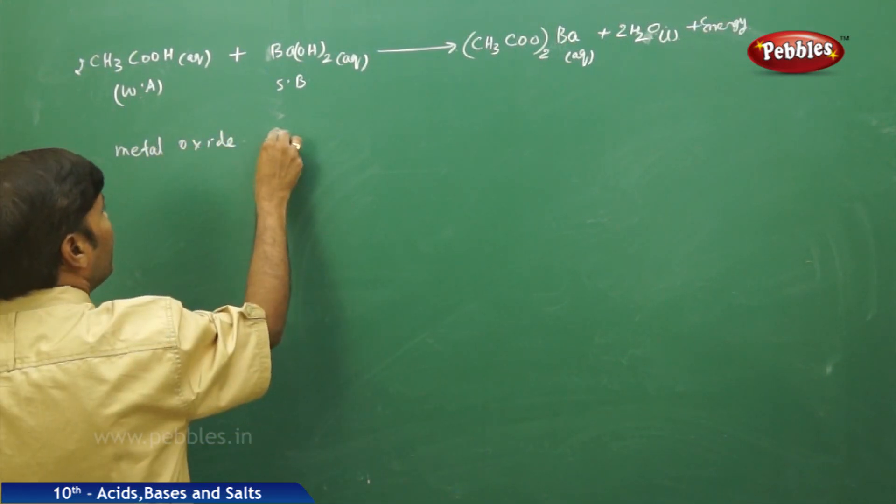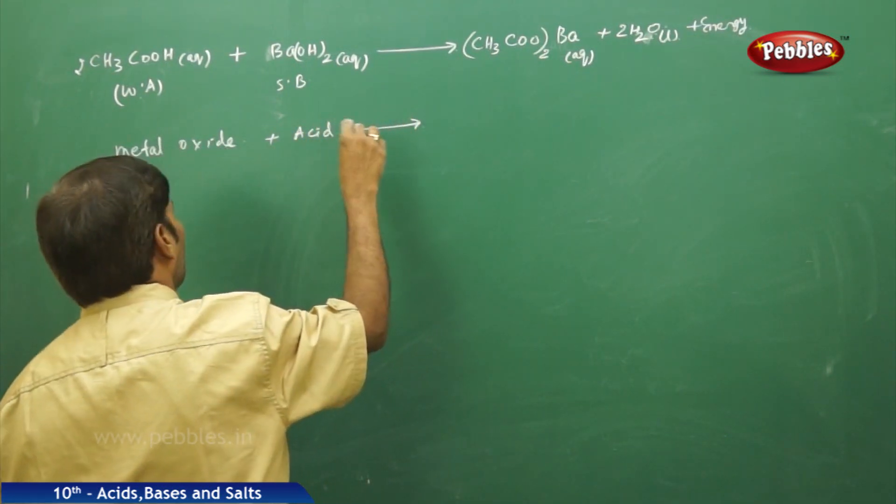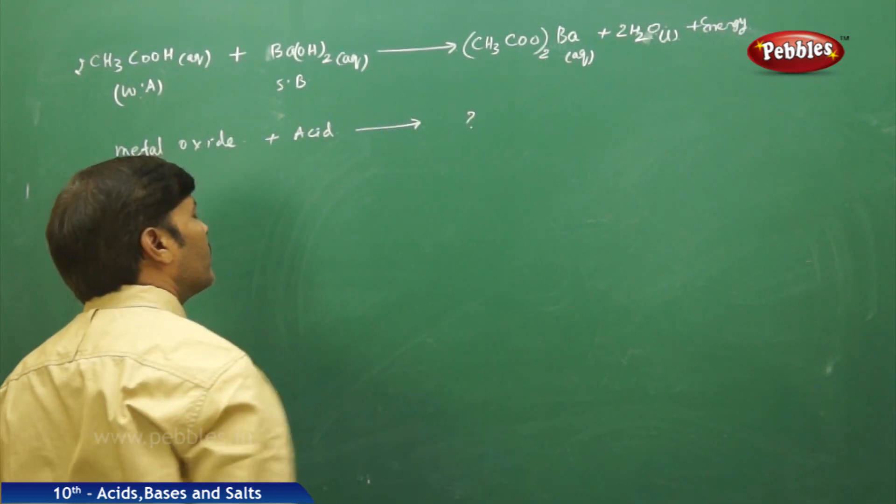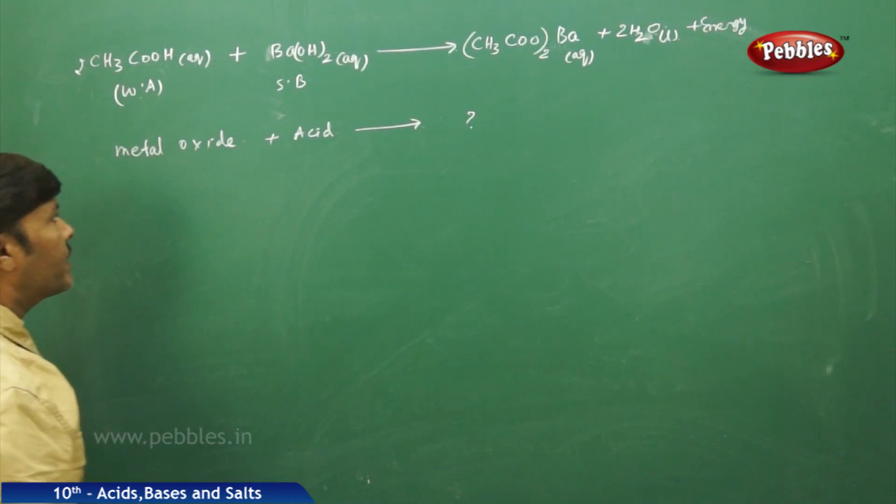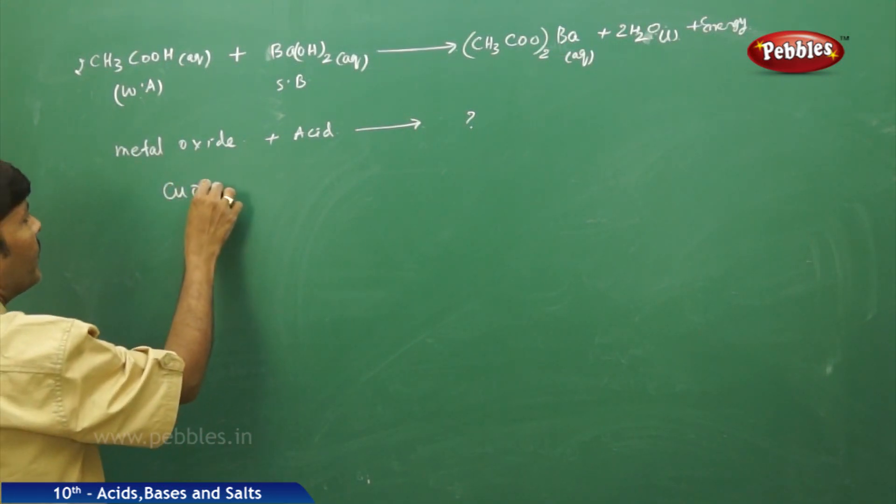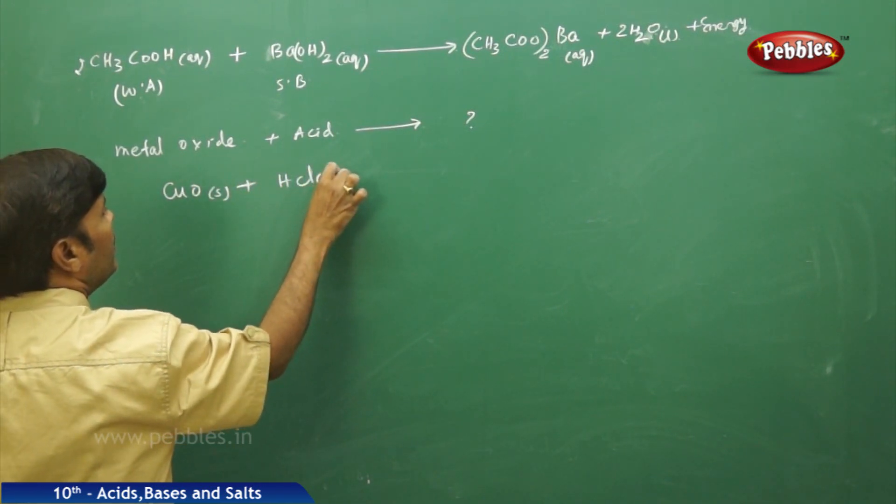So if you go for the other properties of acids, for example, metal oxide, if it reacts with acid, what is the product you are going to get when a metal oxide reacts with an acid? Suppose I am taking cupric oxide, cupric oxide as a solid, reacts with an acid HCl aqueous.